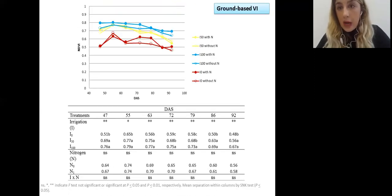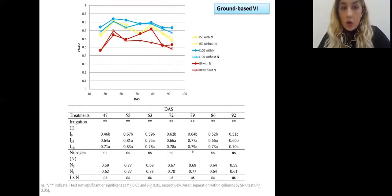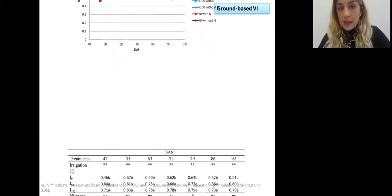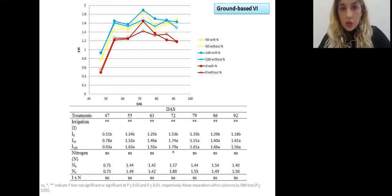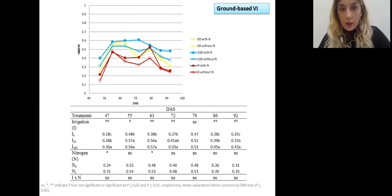Here are some of ground-based vegetation indices. They were separated and the highest values as it was expected they were found for full irrigation with high nitrogen level while the lowest values they were for rain fed without nitrogen. Between all water regimes it was found significant difference and all the indices you can see here SAVI index, they have very similar trends in different stages. For example the highest values they were found in flowering stage.